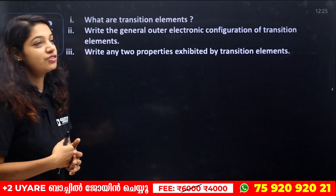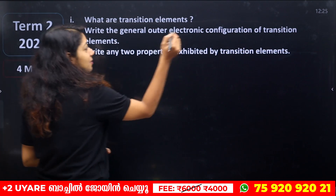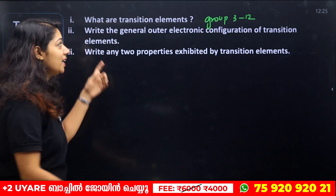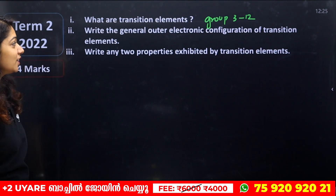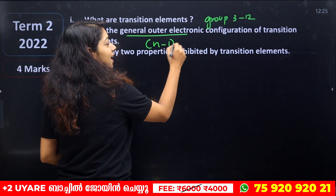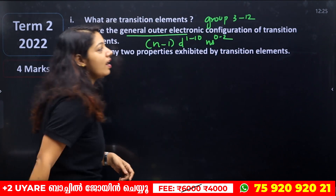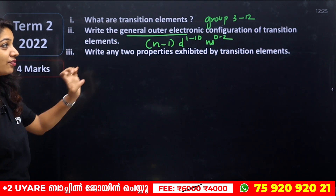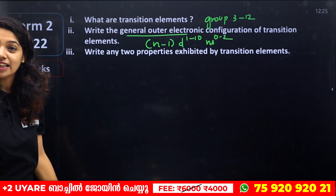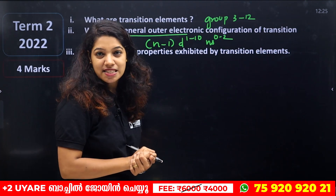What are transition elements? Transition elements are Group 3 to 12 elements. Their general electronic configuration is (n-1)d¹⁻¹⁰ ns⁰⁻², where electrons fill the d-orbital.